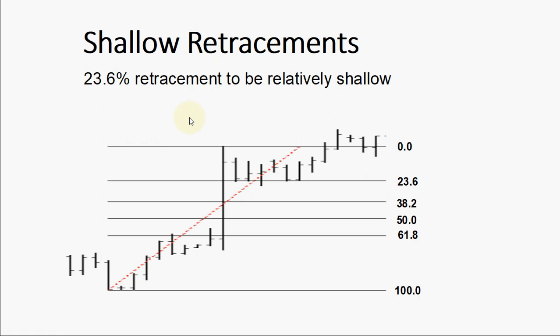We can consider a 23.6% retracement to be relatively shallow. This is an advance in price from here up to the high point, and we have a reversal. Where does the reversal stop? At the 23.6 level — this is the retracement here at the 23.6 level, so this is a shallow retracement. Such retracements will be appropriate for short pullbacks. Shallow retracements do occur, but catching them requires a closer watch and a quicker trigger finger.